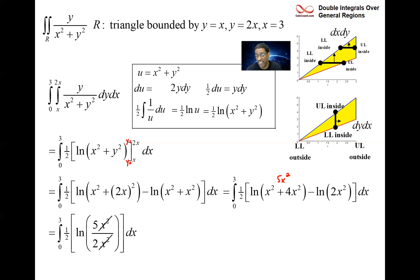Because it's constant, pull it out, and then you're just integrating with respect to x one, so you just get x, and three minus zero. So the answer is three halves the natural log of five halves.